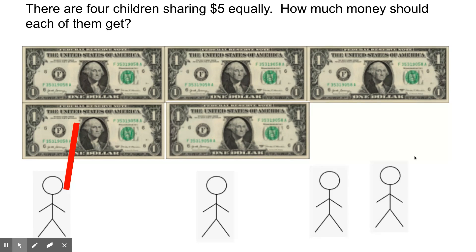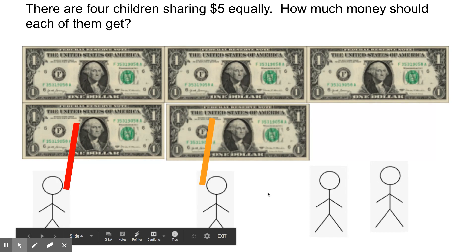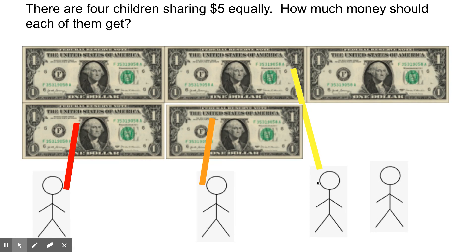So one child gets this dollar. Another child gets this dollar. This child gets this dollar. This child will get this dollar.